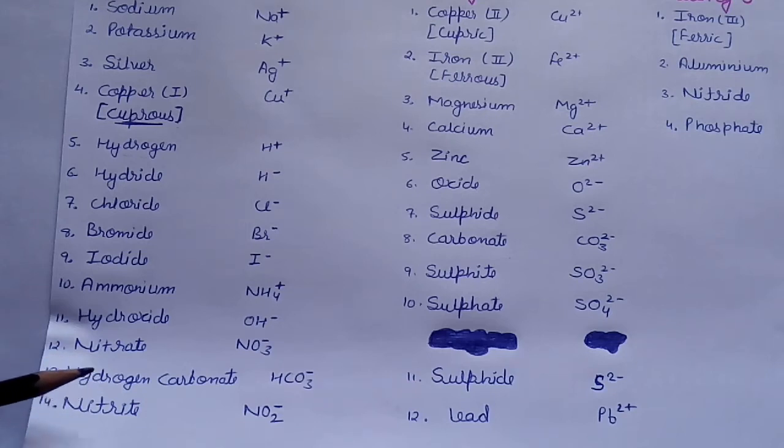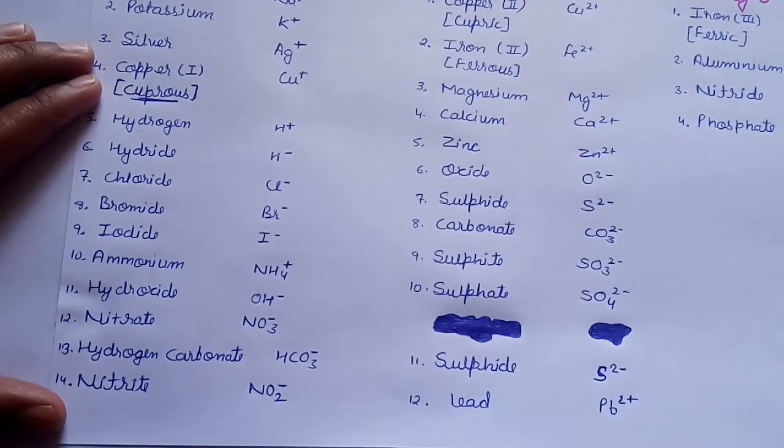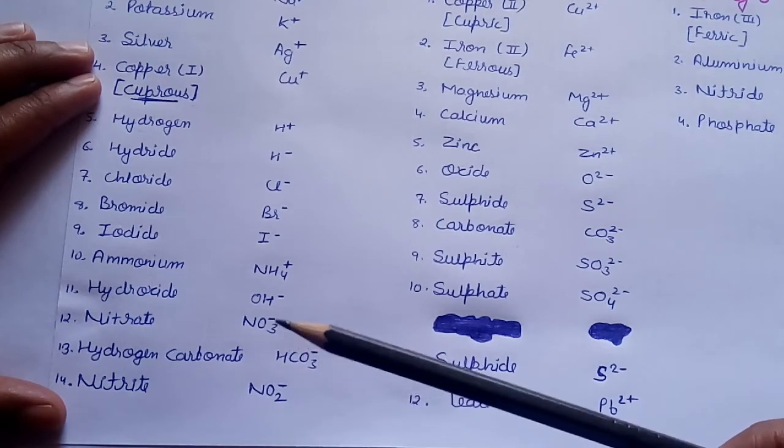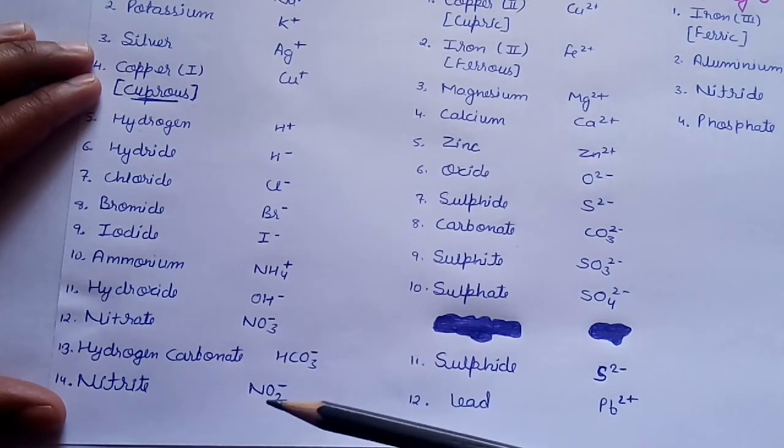Bromide, iodide, ammonium, hydroxide, nitrate and hydrogen carbonate, nitrite. These are the polyatomic ions. As you remember, these are a group of atoms having charge. You must not confuse between nitrate and nitrite. Look, they are different things. Nitrate is NO3 negative while nitrite is NO2 negative.